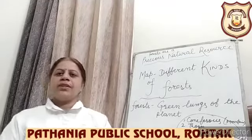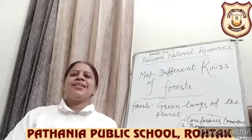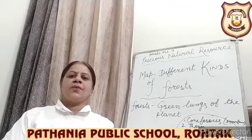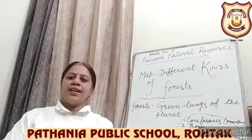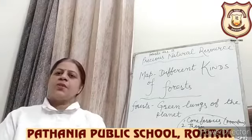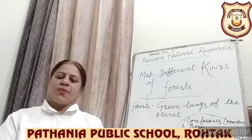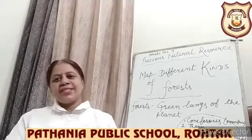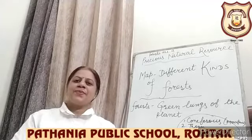Today we will do map work and the topic is different kinds of forests. Our country is blessed with a wide variety of forests, but we have a limited area of land under forests. Because of different climatic conditions, different types of forests are found in India. We will cover four important types: number one, coniferous, also called mountain forest; number two, thorn forest; number three, deciduous or monsoon forest; number four, evergreen or tropical forest. Get ready with your physical map of India, pencil, and sketch colors.